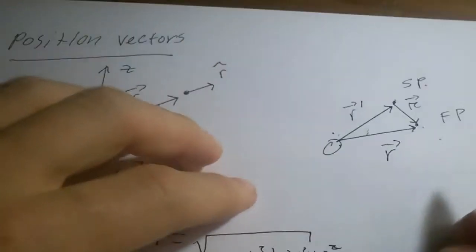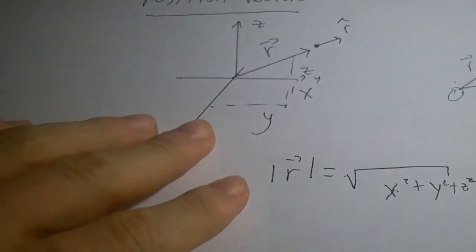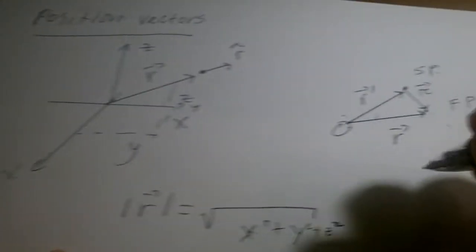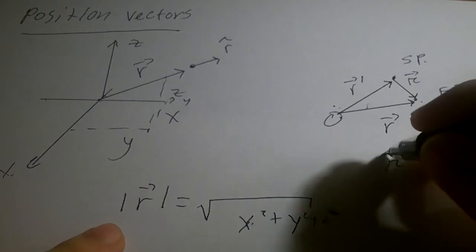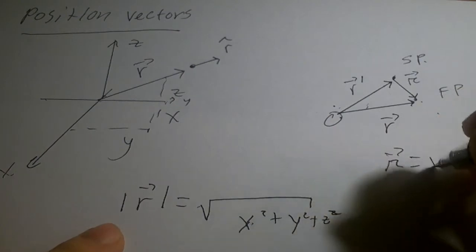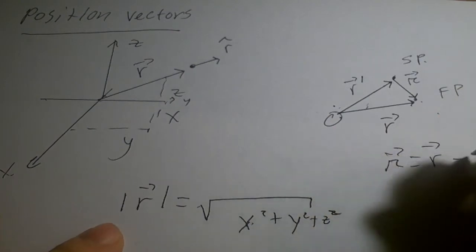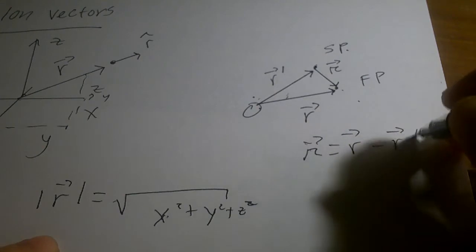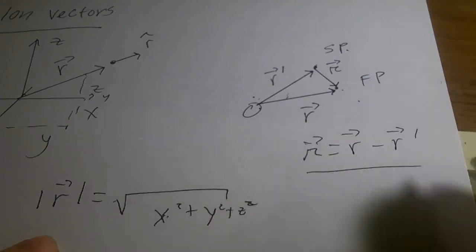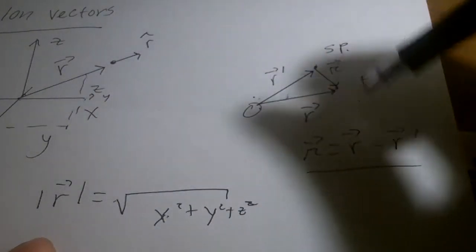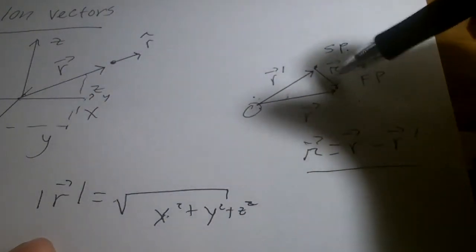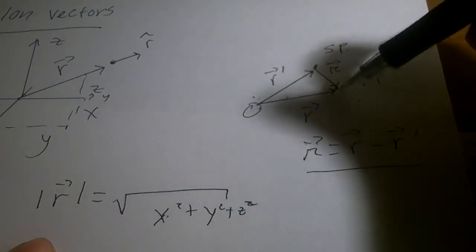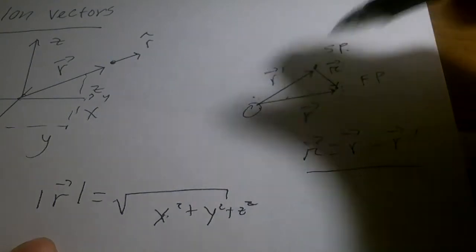So you can really say that script r is r minus r prime. That's the separation vector between the field point and the source point.